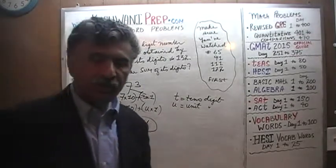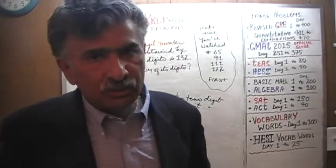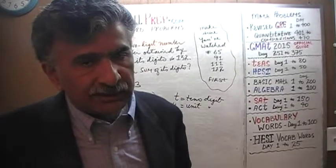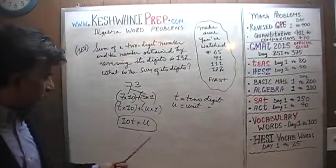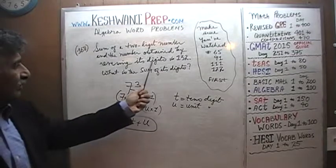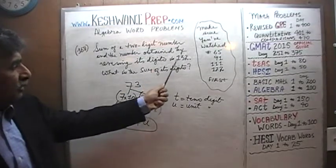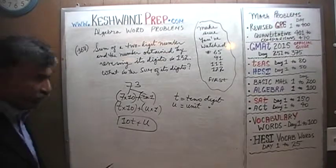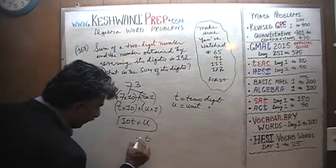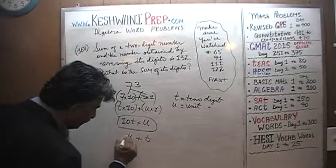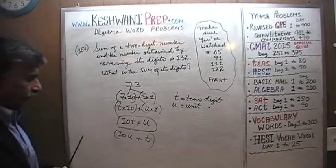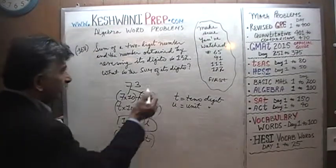We represent the concept of a two-digit number in the language of algebra using unknown quantities T and U — T being the tens digit and U being the units digit — like this: 10T + U. When we reverse the digits, whatever was the tens digit becomes the units digit and vice versa, so the reversed number is 10U + T. We are told that if we take our original number and add it to the number obtained by reversing the digits, the sum is 132.